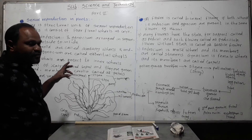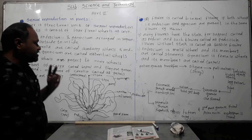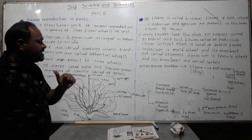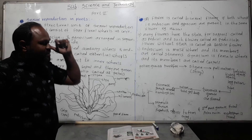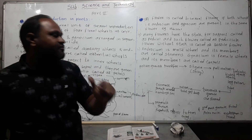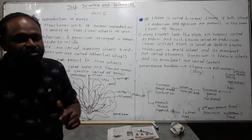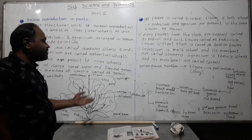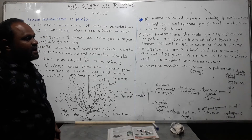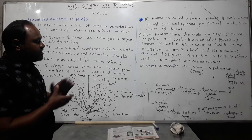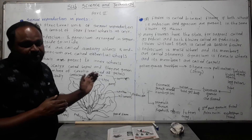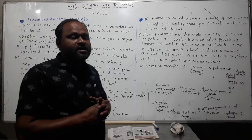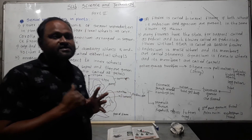The second male gamete fuses with the polar nuclei to form the endosperm. Since fertilization occurs in two stages — first the male gamete fuses with the egg cell to form a zygote, and second the male gamete fuses with polar nuclei to form endosperm — this process is called double fertilization.